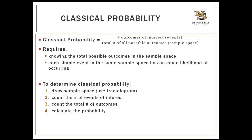Classical probability also requires that each simple event in the sample space has an equal likelihood of occurring — the chance of rolling a one is the same as rolling a two, the same as rolling a three. Every side of the die has an equal chance. For classical probability, you first draw the sample space using a tree diagram, then count the events of interest, then count all possible outcomes, and finally calculate probability as events of interest divided by total possible outcomes.